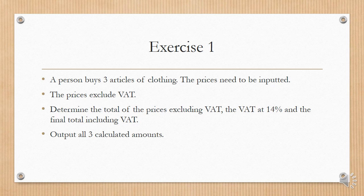Exercise 1. A person buys three articles of clothing. The prices need to be inputted. The prices exclude VAT. Determine the total of the prices, excluding VAT, the VAT at 14%, and the final total, including VAT. Output all three calculated amounts.